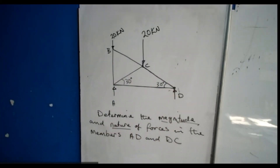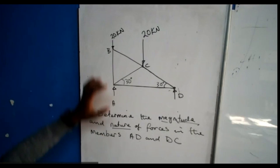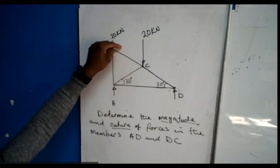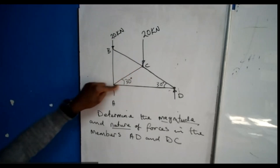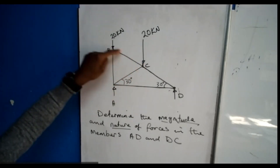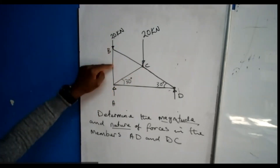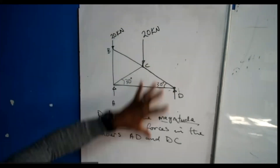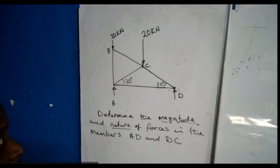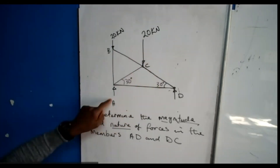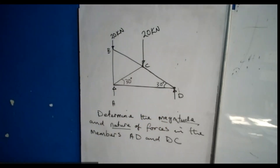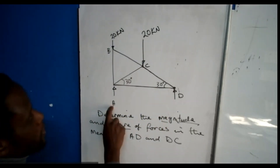Before we can start, what we need to know is that this is a frame made up of members from A to C, from B to C, from A to B, and so on. This forms what is known as a frame. We cannot determine those members without knowing the reactions, so the first thing we need to do is get the reactions at the supports.